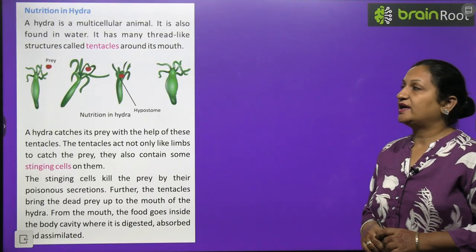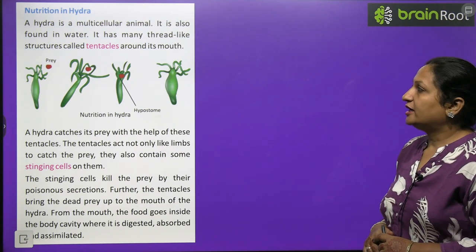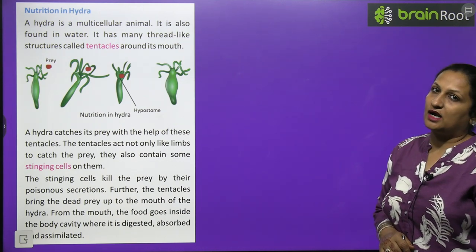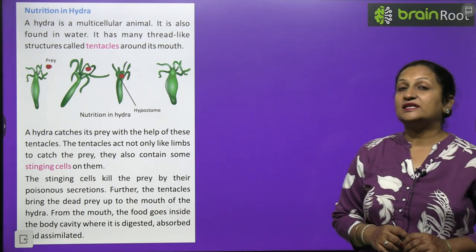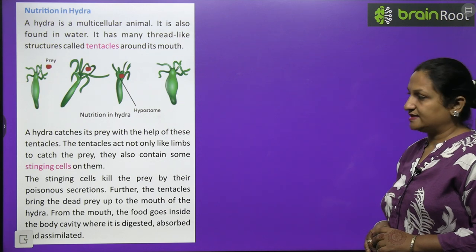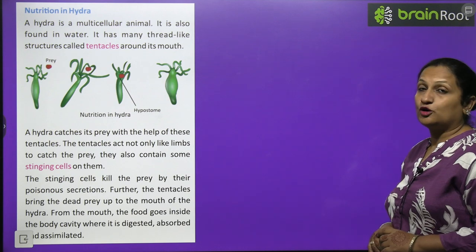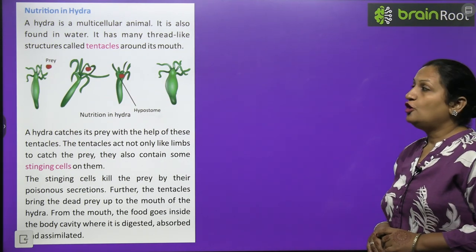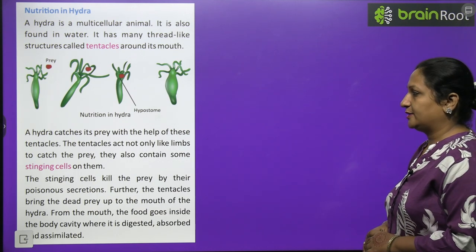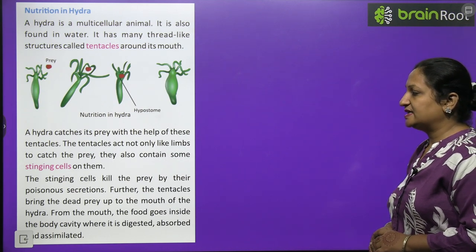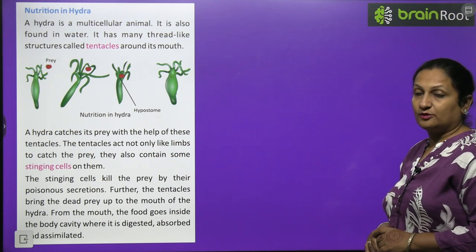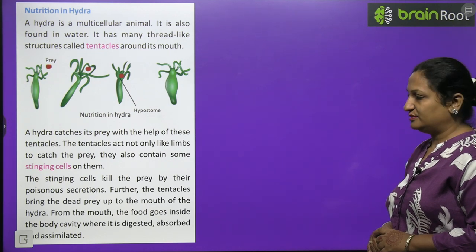Nutrition in Hydra: Hydra is a multicellular animal found in water. Its body has thread-like structures called tentacles around its mouth. These tentacles have stinging cells that release poisonous substances into the prey's body. The hydra catches its prey with the help of these tentacles — they not only catch the prey but also sting it, releasing poison to kill it so it can be easily engulfed. The tentacles then bring the dead prey to the mouth, from where food goes into the body cavity where it is digested, absorbed, assimilated and ejected.